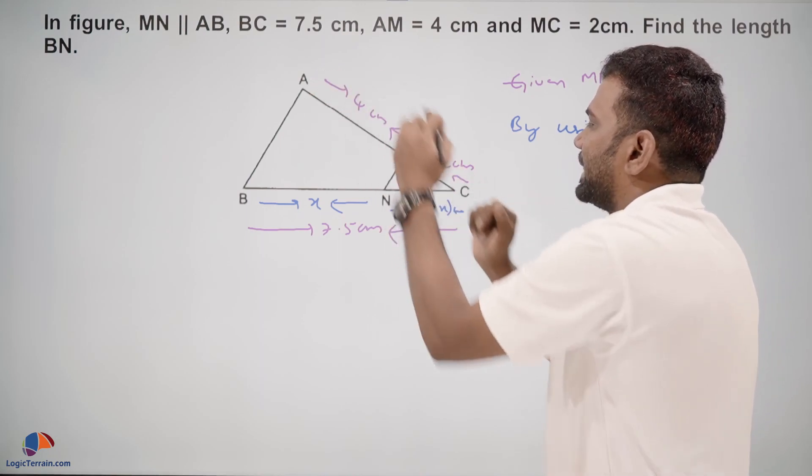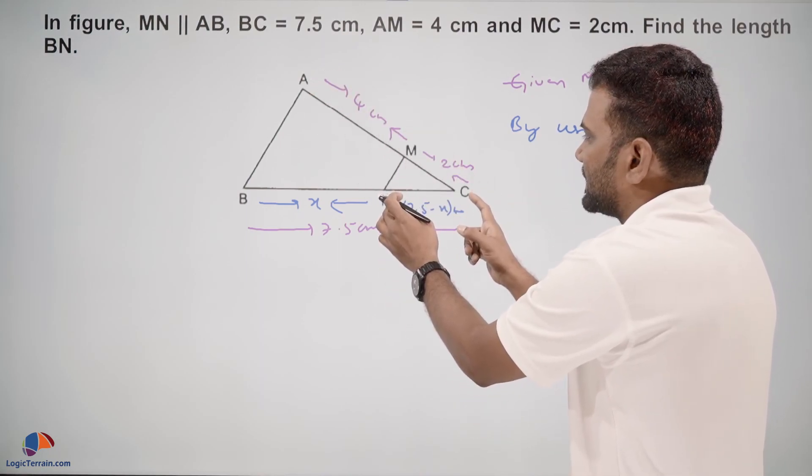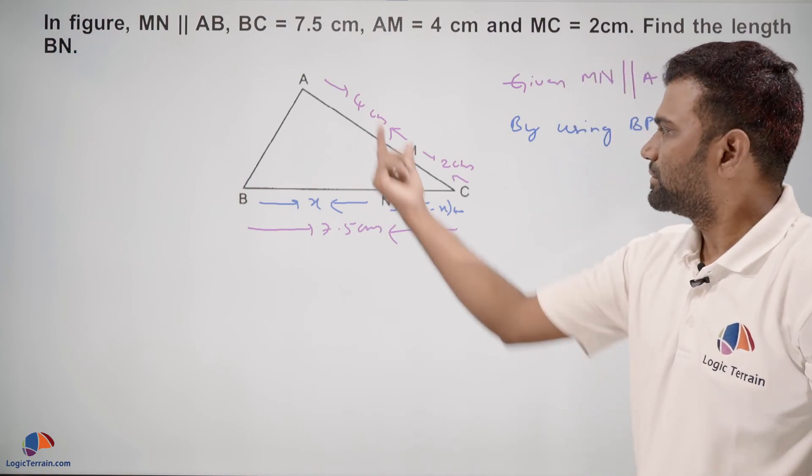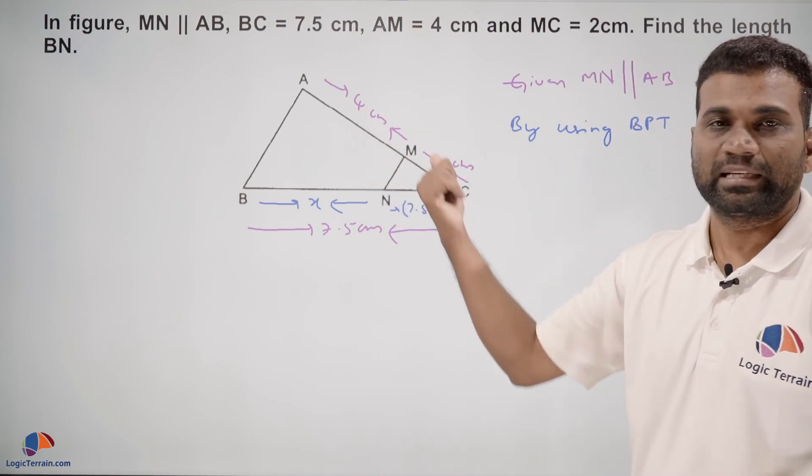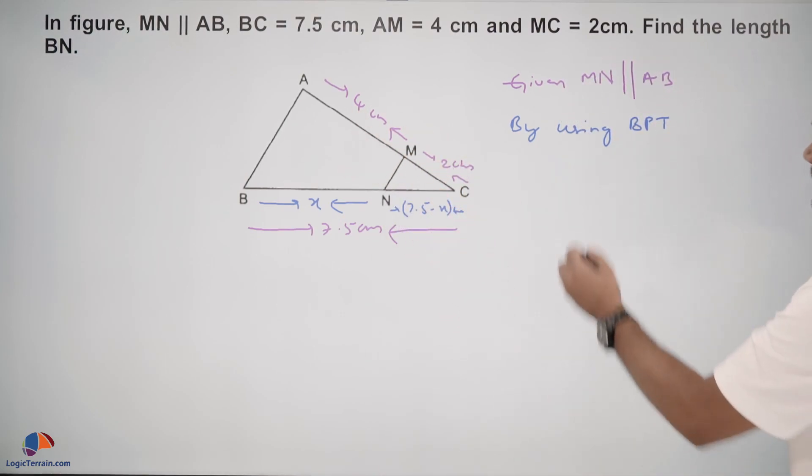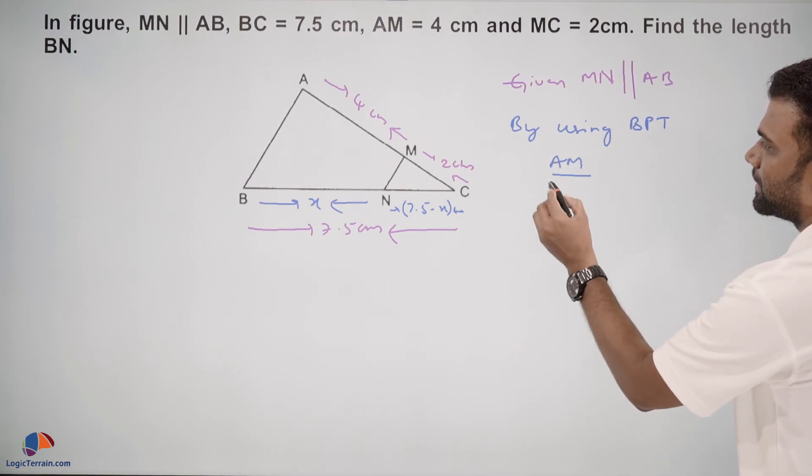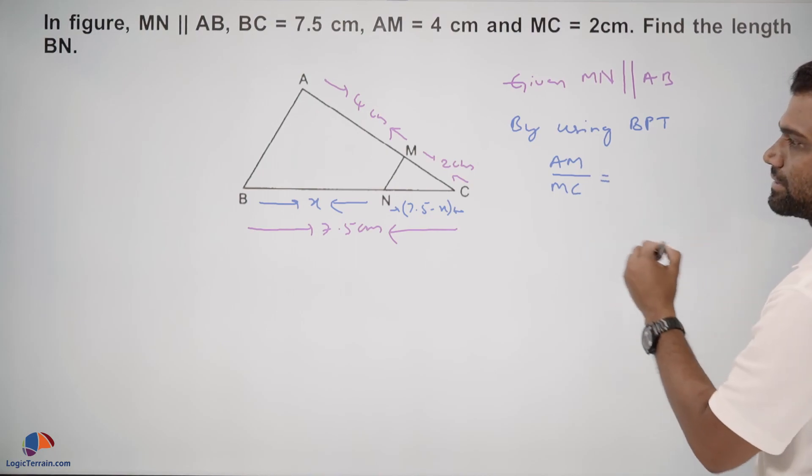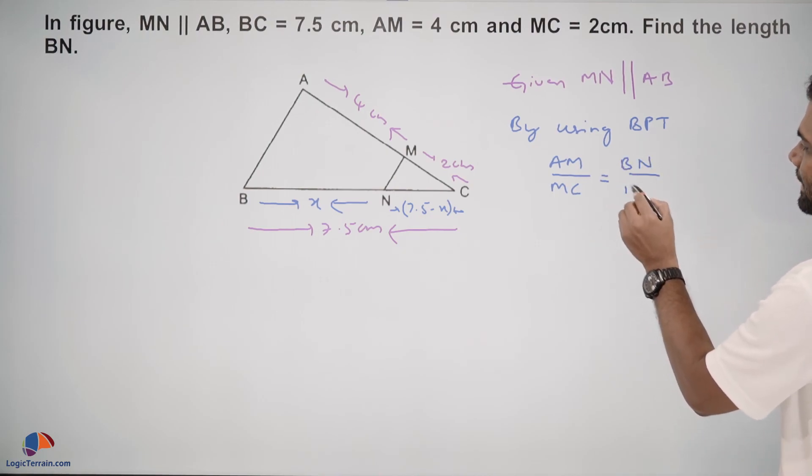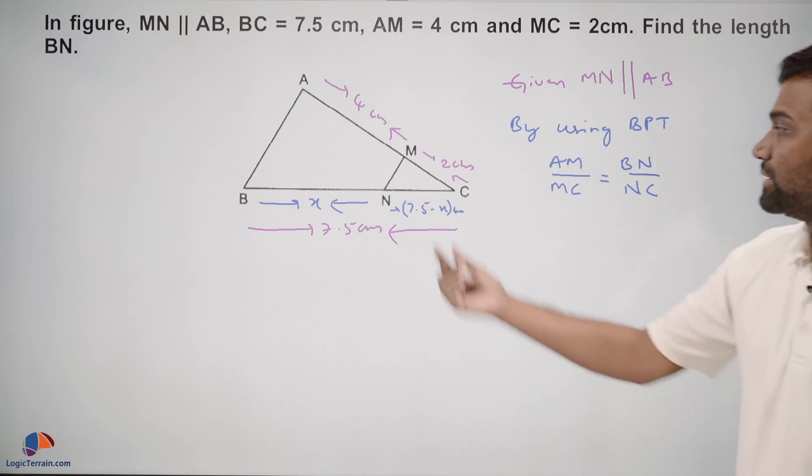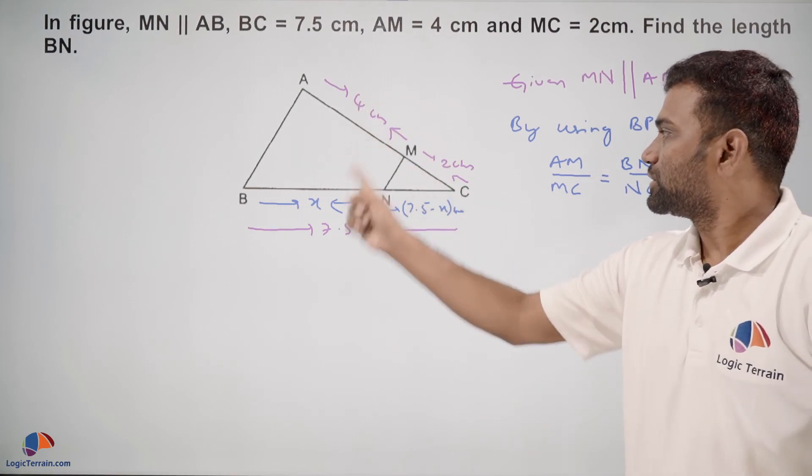Which means MC upon AM equals NC upon BN, or vice versa. By using BPT, AM upon MC equals BN upon NC. This line divides these two sides in equal ratio.